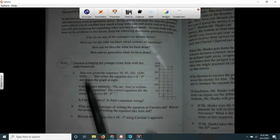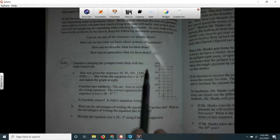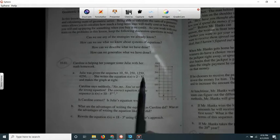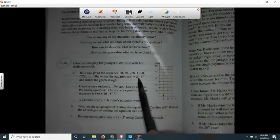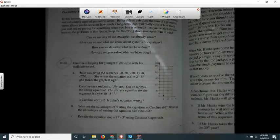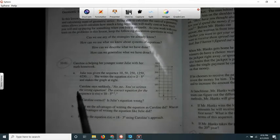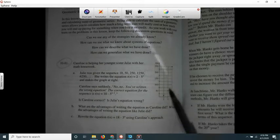Problem 10-81 says Caroline's helping her younger sister Julie with her math homework and Julie was given this sequence: 10, 50, 250 and so on. She writes this equation T(n) = 2 times 5 to the n. We know that's like y = a times b to the x, so that is how I like to write an exponential. The 2 is always the zeroth term and the 5 would be the multiplier.